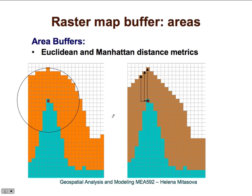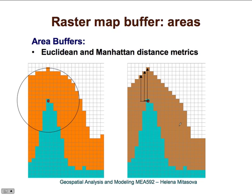This was an example of buffers along a line. We can also generate buffers around areas, which I will use to illustrate Euclidean and Manhattan distance metrics. With Euclidean distance, we draw a circle around each point on the boundary of the rasterized area and the buffer has a smooth, rounded shape. With Manhattan distance, instead of a circle we follow raster grid cells in the x and y directions, producing a much sharper-edged buffer shape.